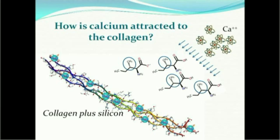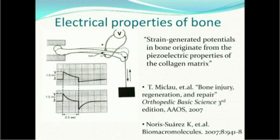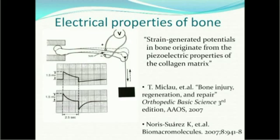How is the calcium then attracted to the collagen? That's where silicon comes in. Bone has electrical properties, and it's been shown that if you compress bone, there are strain-generated potentials in bone that originate from piezoelectric properties in the collagen matrix. When you compress the collagen, it generates a negative electrical charge on the side where the pressure is and a positive charge on the other side, and bone builds up on the side of the negative charge.